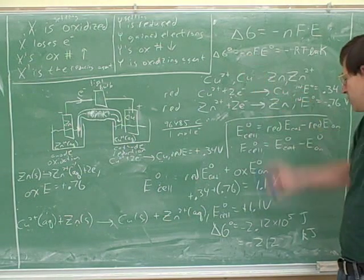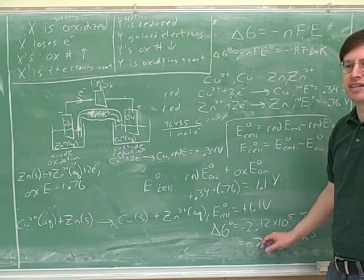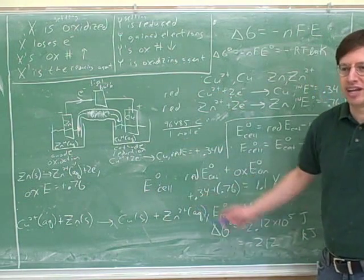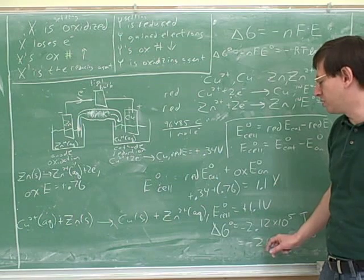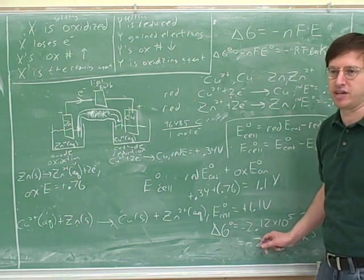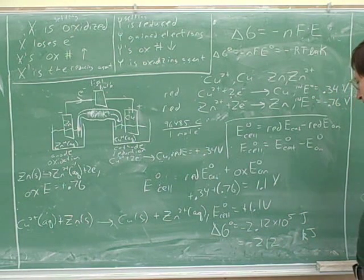So we need to know what to plug into this formula. Now, this came out to be negative. Is that what we expected? Yes. Because it's a spontaneous reaction. Again, if this had come out positive, we would know that somewhere along the way we had a math mistake or a set of mistakes. All right. So now we've figured out the delta G.